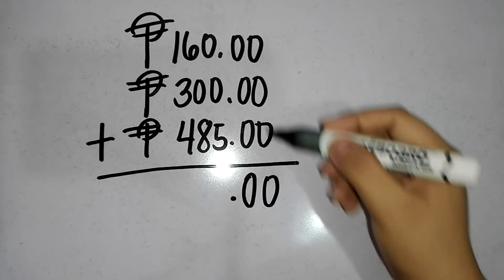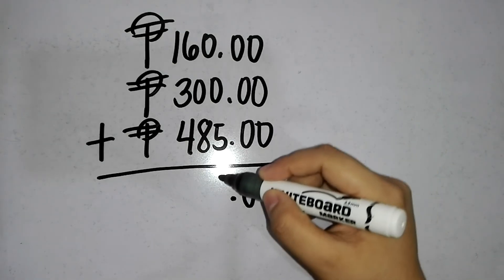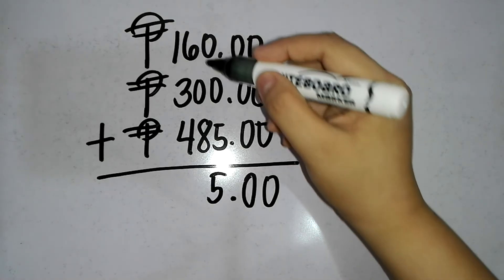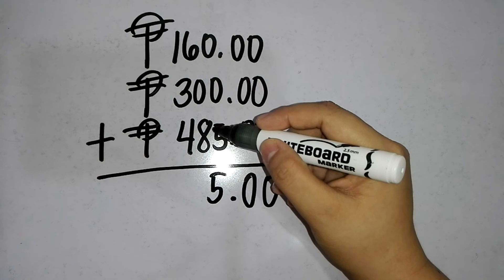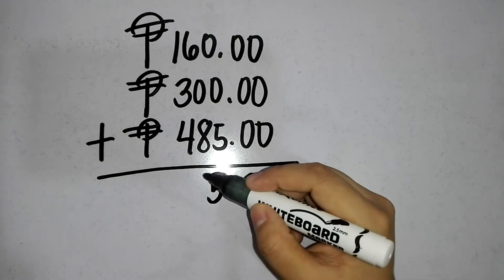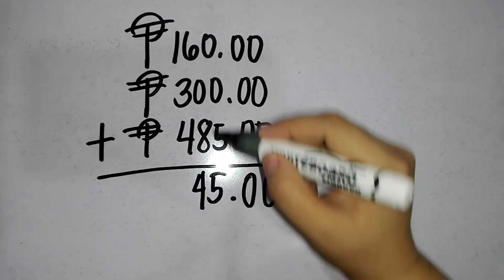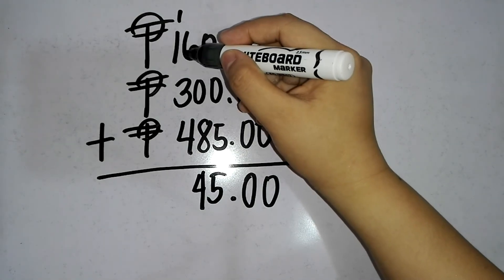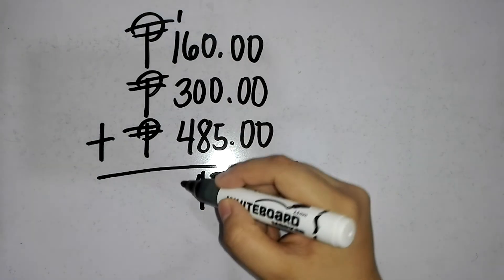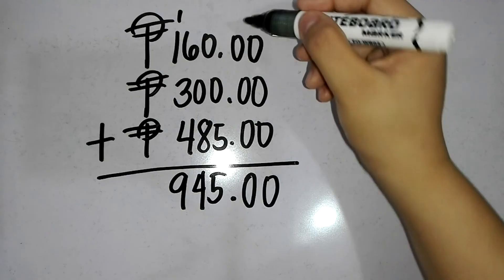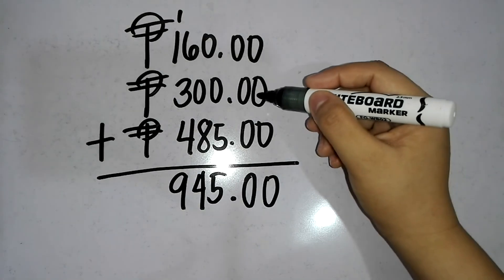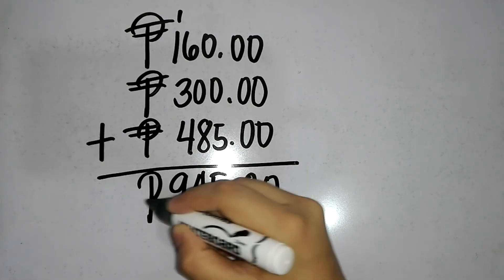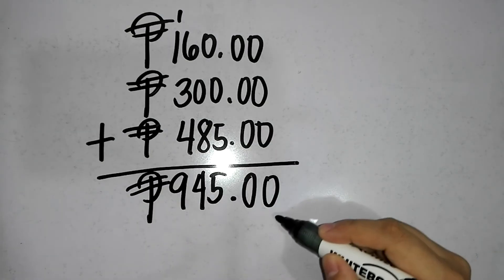Now, let's add the whole numbers. 0 plus 0 plus 5 is equal to 5. 6 plus 0 plus 8 is equal to 14 — we write 4 and carry 1. 1 plus 1 plus 3 plus 4 is equal to 9. So, 160 pesos plus 300 pesos plus 485 pesos is equal to 945 pesos.